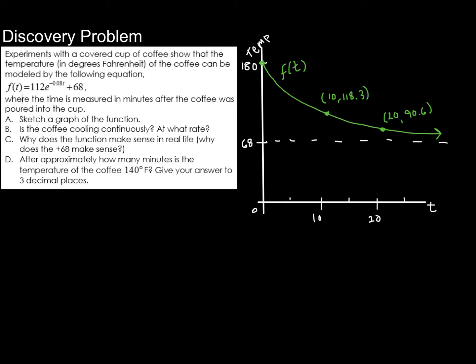Alright, so is the coffee cooling continuously, and at what rate? It certainly is, and the way I can tell that it's cooling continuously, just by looking at the function, is that we have a continuous decay function here. But also, just from a standpoint of real life, it's pretty obvious, you have a cup of coffee, at every instant, it is cooling. Now, it might not be cooling by a whole lot each instant, but those little changes over time do add up. What is the rate at which it's cooling? Well, it's cooling at a rate of 0.08 is the rate, and so when we convert this to a percent, we see that that's 8%, and we know that we're counting by minutes. So our rate is going to be 8% per minute.